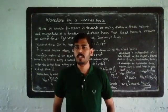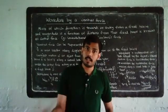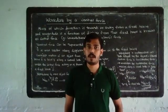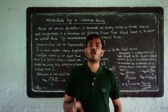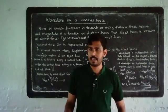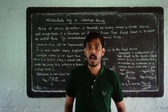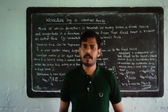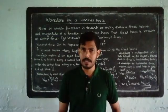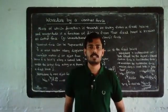A central force is one whose magnitude is a function of distance from a fixed point, and its direction is towards or away from that fixed point. Such a force is known as a central force. For example, gravitational force is directed towards or away from the center of the earth, with magnitude GM/r². Here G is the gravitational constant, M is the mass of the earth, m is the mass of the object — all constants — while r varies, so the force magnitude is a function of r.